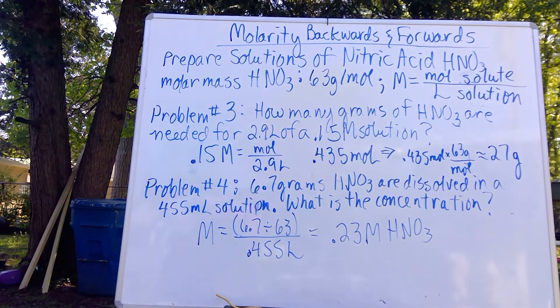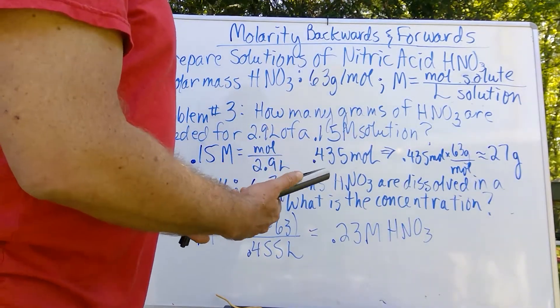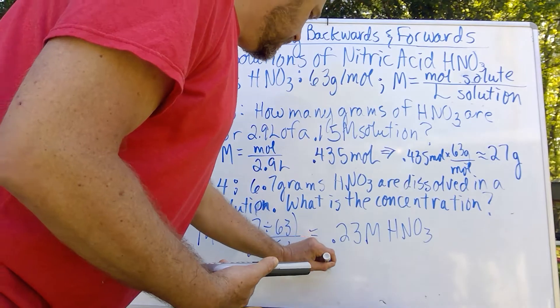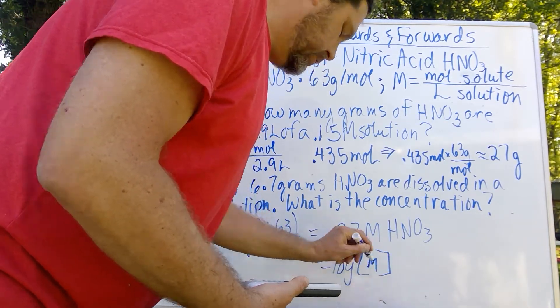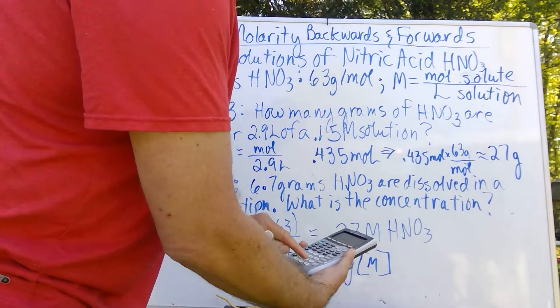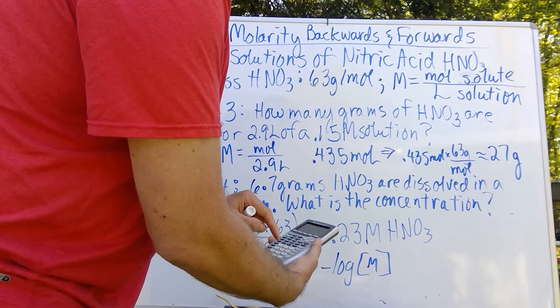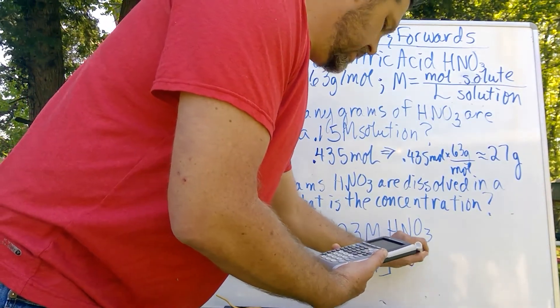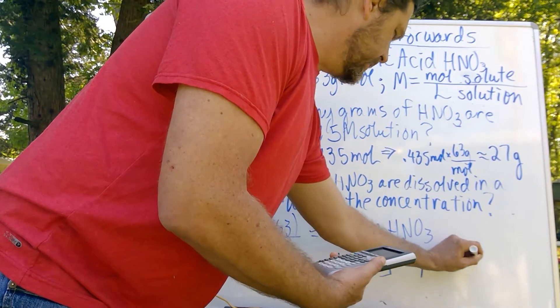By the way, just to tie that into pH, if you've seen the video regarding concentration and pH, if we take the negative log of our concentration here, which is 0.23, and I'll do that right here, hit our negative log, and 0.23, we find a pH of 0.64.